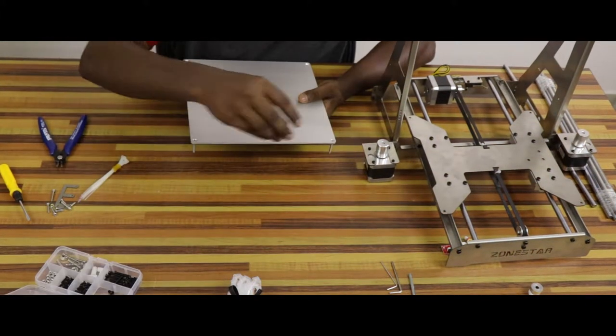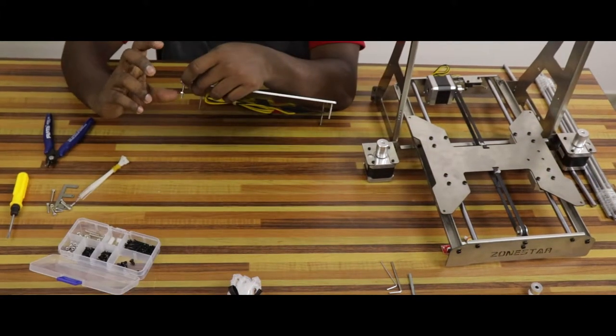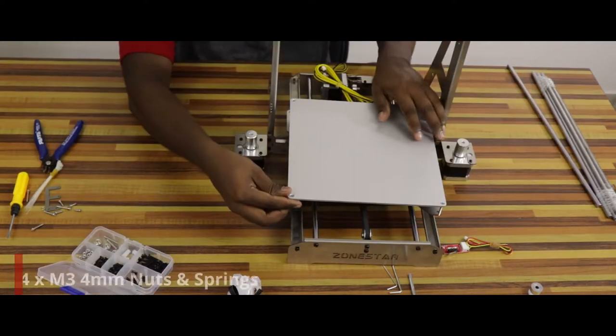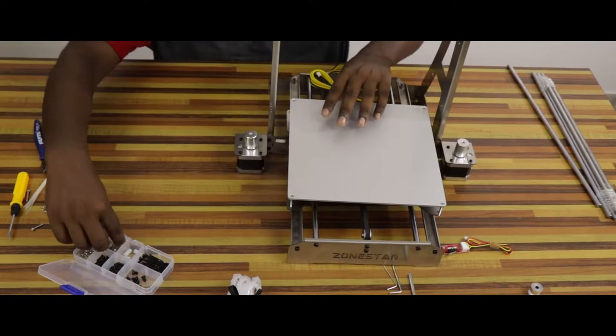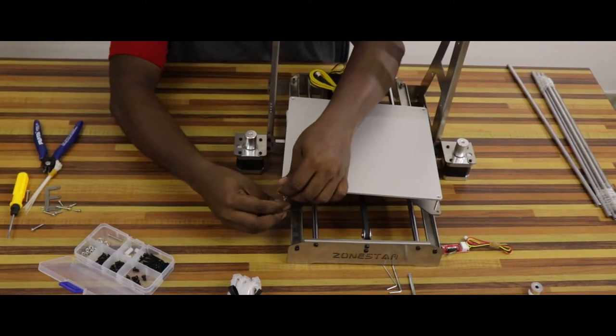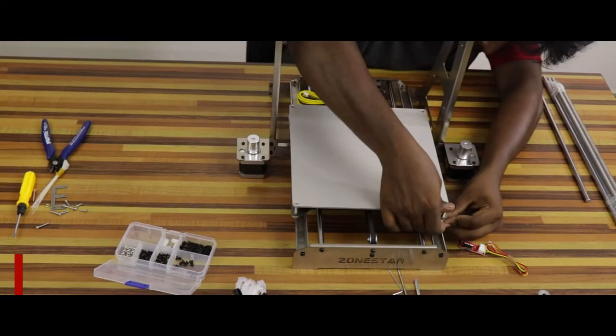Now, we can attach the heat bed. Use the four screws that came with the screws and nut box and attach it with four M3 4mm nuts and finally attach springs and hand nuts which are used to adjust the height of the heat bed on all four sides.